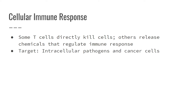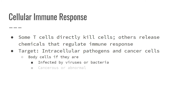If you remember that B cells target extracellular pathogens — like a virus floating in lymph — T cells do the exact opposite. T cells target intracellular pathogens and cancerous cells. So body cells that have been infected by viruses or bacteria, cancerous or otherwise abnormal body cells, and also foreign cells. Like if we get a transplant, we don't have our cell's antigen, so our body recognizes them as foreign and attacks them.